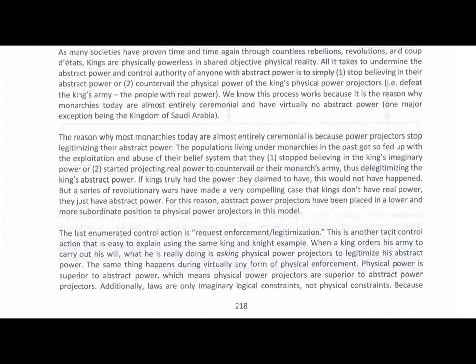The reason why most monarchies today are almost entirely ceremonial is because power projectors stopped legitimizing their abstract power. The populations living under monarchies got so fed up with the exploitation and abuse of their belief system that they either stopped believing in the king's imaginary abstract power, or started projecting real power to countervail their monarch's army, thus de-legitimizing the king's abstract power. If kings truly had the power they claimed to have, this would not have happened, but a series of revolutionary wars have made a very compelling case that kings do not have real power — they just have abstract power. For this reason, abstract power projectors have been placed in a lower and more subordinate position to physical power projectors in this model.